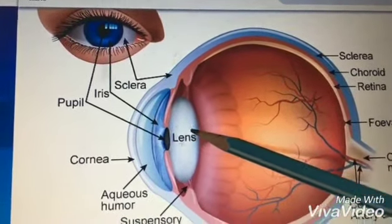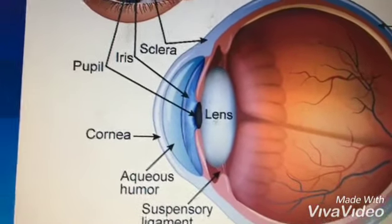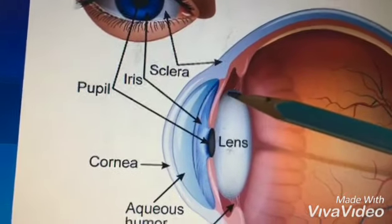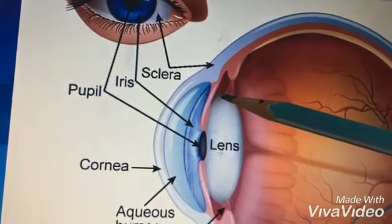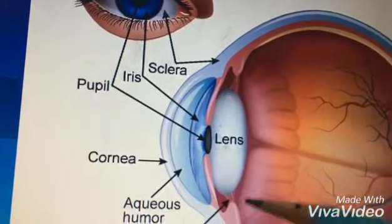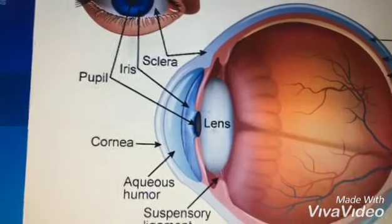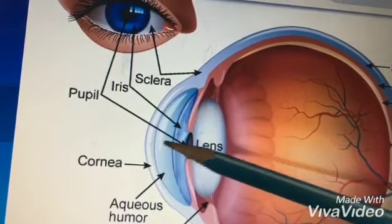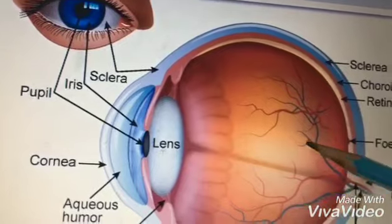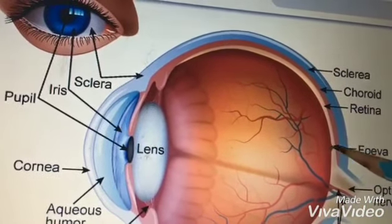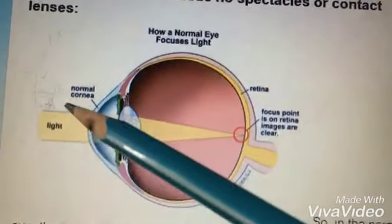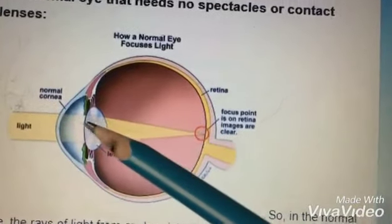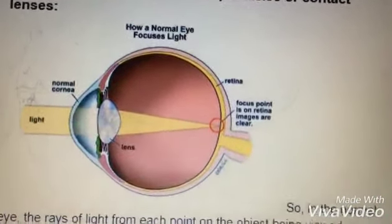The next part is the lens. The lens is a transparent biconvex structure — transparent meaning visible, and biconvex meaning both sides are convex, so the middle part is thick and the edges are thinner. With the help of the cornea and lens, light coming from a distance will be refracted and focused onto one point on the retina.